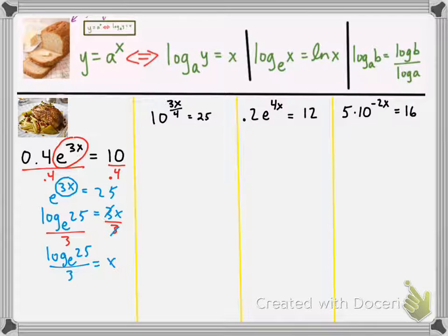But again, writing it as log base e, you can leave it like that, it's totally fine. Or, you can write it the fancy way of writing it as ln of 25 all over 3 is equal to x, and that's an easy one to type into the calculator. You can type that directly into the calculator, ln of 25 all over 3. And I should probably do that just so you know that you've got it right.